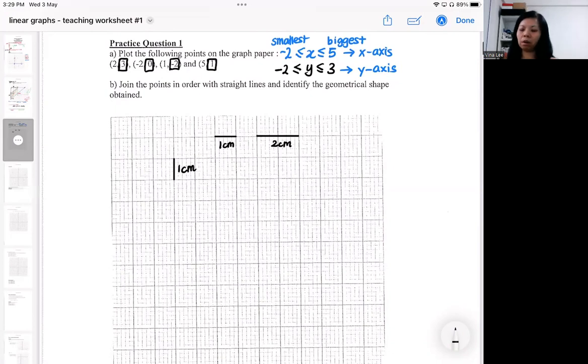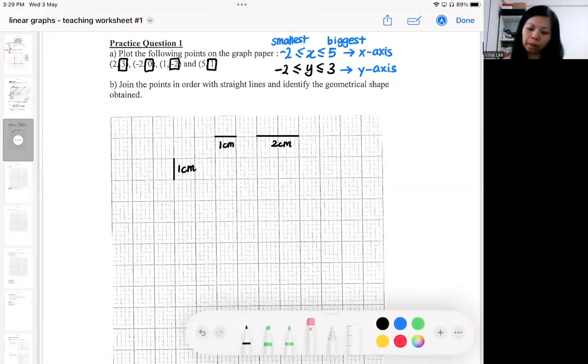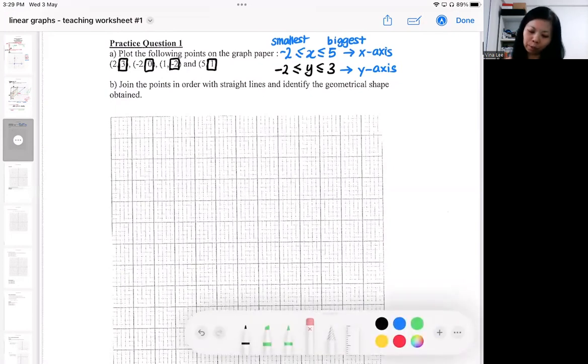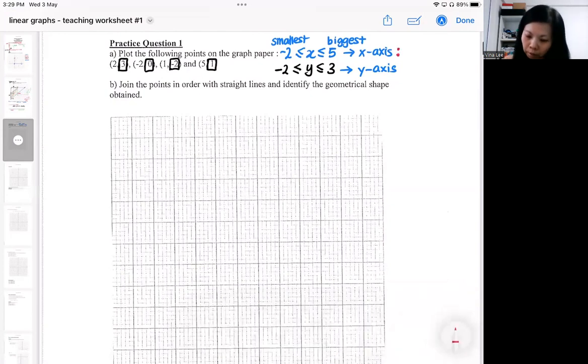So why is that so? Because in your exam question, they will tell you how to represent. So for example, here I will tell you one centimeter to one unit. So maybe make things easier first. And then here, maybe I show you two centimeters to one unit.